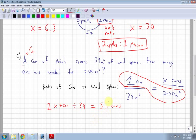So because you can't buy 5.1 cans, you're going to have to make it 6 cans. You're going to have to buy 6 cans. You're going to have a little bit left over, which is okay. So how many cans are needed? Actually 6. 5.1 is accurate, but if I'm looking at how many cans I would need 6.